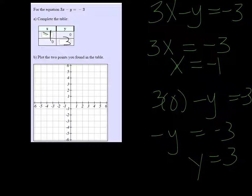Highlight the negative 1. And I can plot these two points. So negative 1, 0, and 0, 3.